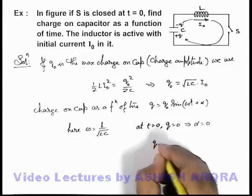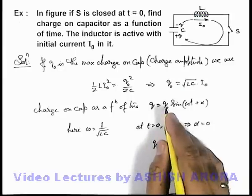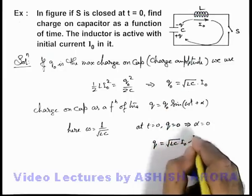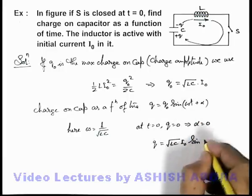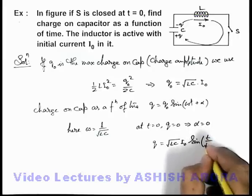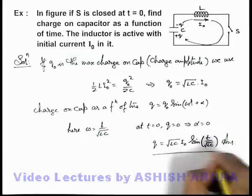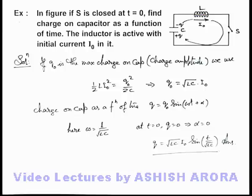So we can write the charge as a function of time as q₀, which we can write as √(LC)I₀, sine of omega t. Alpha we can take as zero, so this'll be t/√(LC). This'll be the answer to this problem, that is charge on capacitor as a function of time.